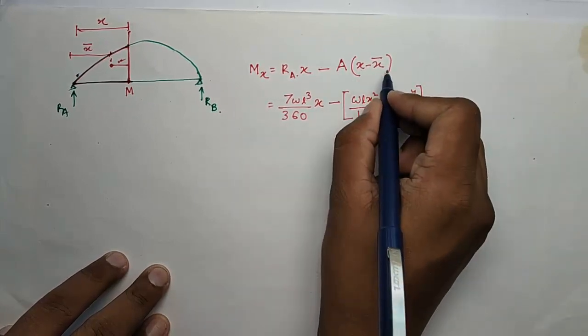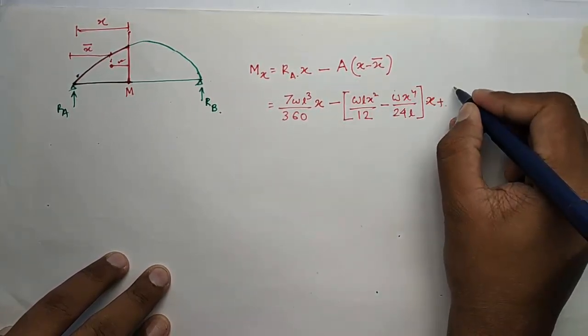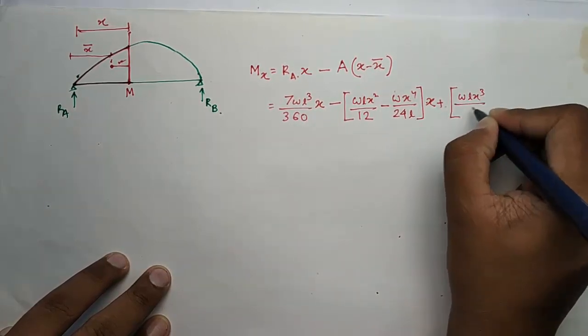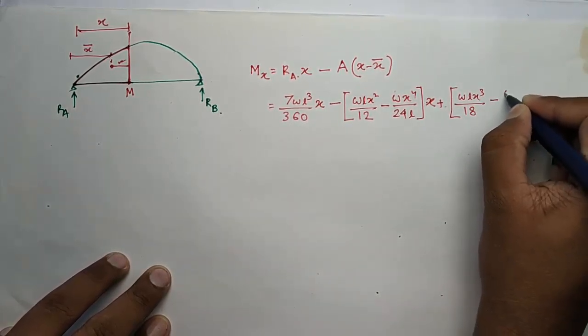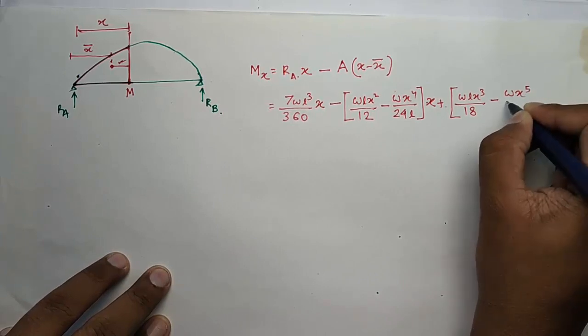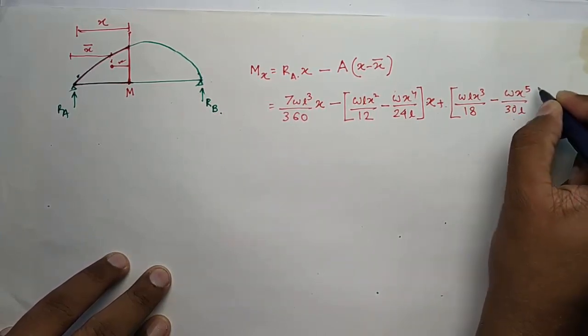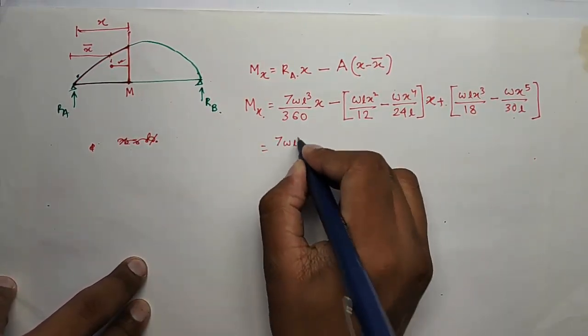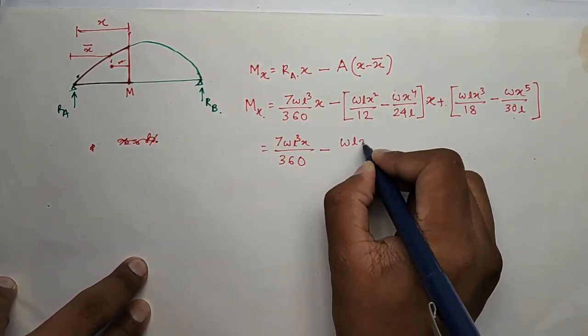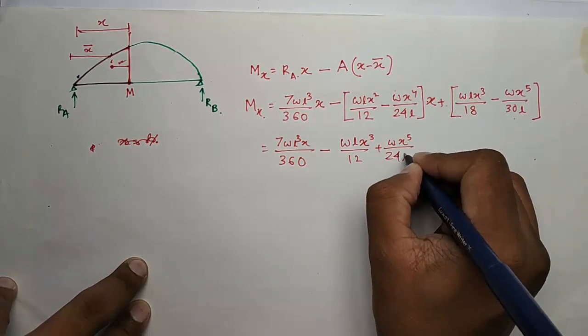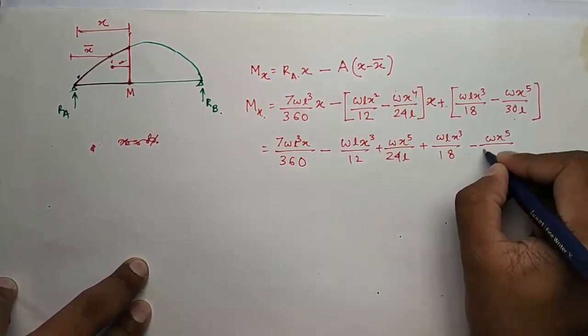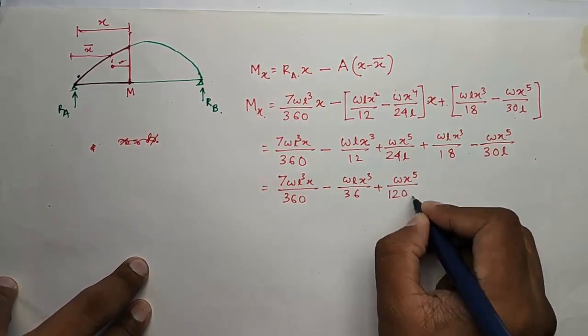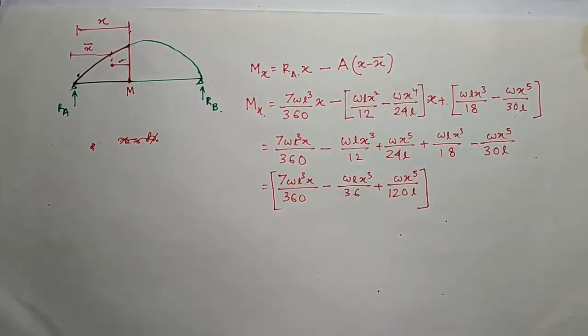X bar we found out earlier. The moment equation becomes 7WL cubed by 360EI x minus WL cubed by 18EI minus WX to the power 5 by 30LEI. So this is the moment equation. Solve this.